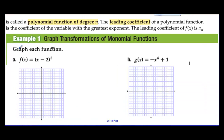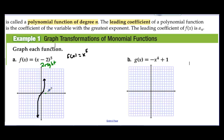Graph transformations of monomial functions. Let's graph f(x) = (x − 2)⁵. The parent function f(x) = x⁵ passes through (0,0), (1,1), and (−1,−1), with 2⁵ = 32 way up there. Subtracting 2 from the x moves this function 2 units to the right, because the minus 2 is on the inside of the function. So each point is shifted 2 to the right.